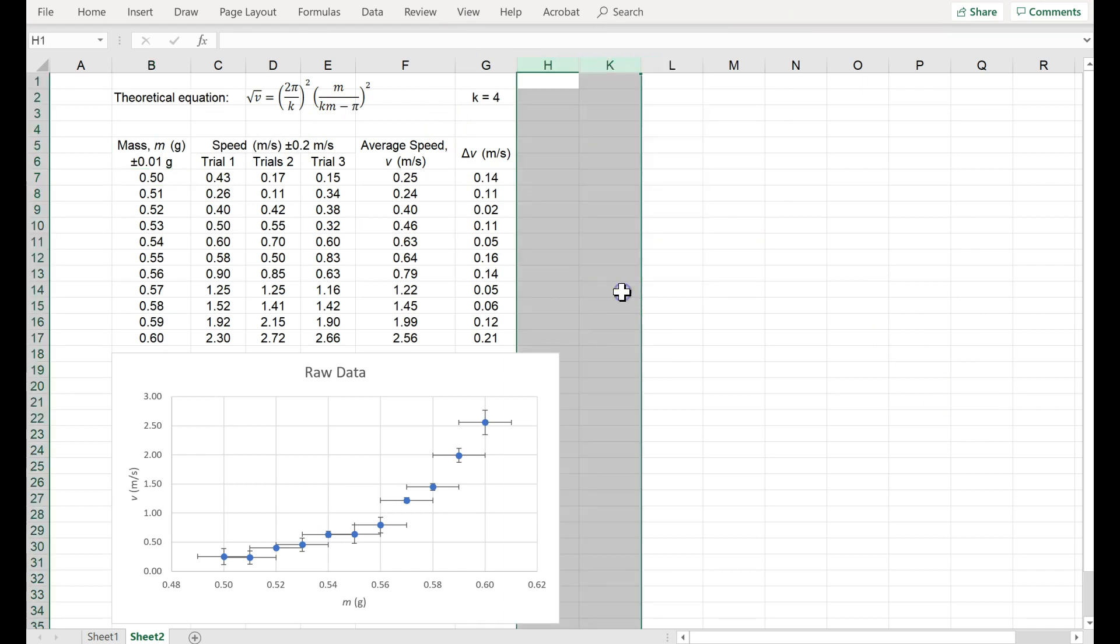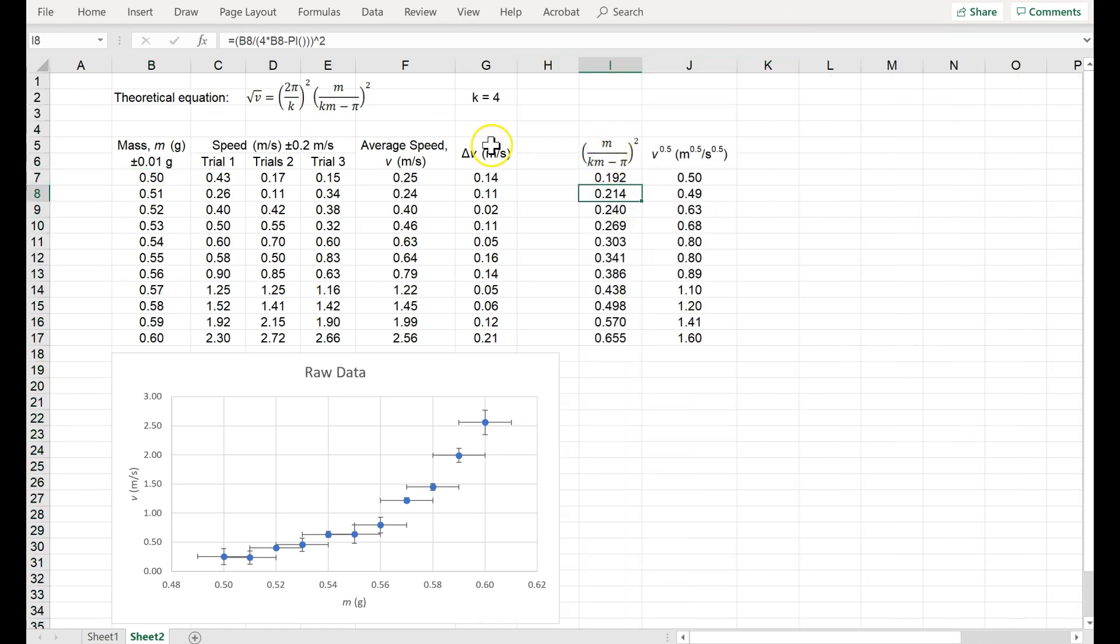Okay, when I take these masses and I calculate that crazy fraction and I square it, here's what I get. So I've done that process. I've also square rooted all of the speeds, or raised it to the 0.5 power, and notice my units as well.